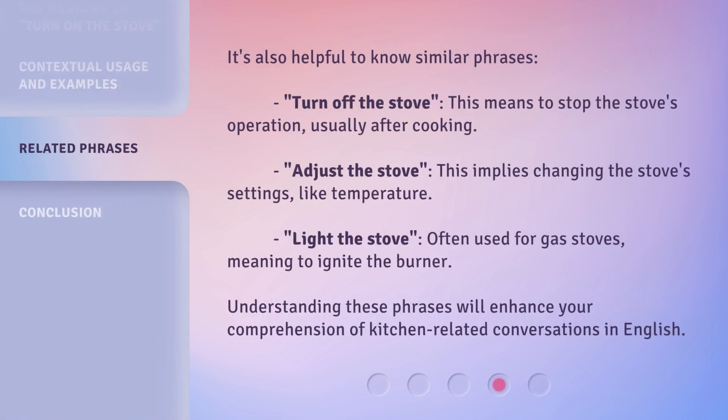It's also helpful to know similar phrases. 'Turn off the stove' means to stop the stove's operation, usually after cooking. 'Adjust the stove' implies changing the stove's settings, like temperature. 'Light the stove,' often used for gas stoves, means to ignite the burner. Understanding these phrases will enhance your comprehension of kitchen-related conversations in English.